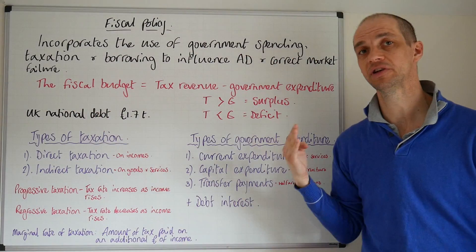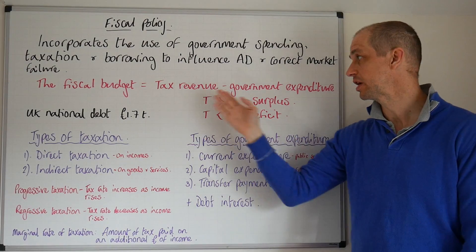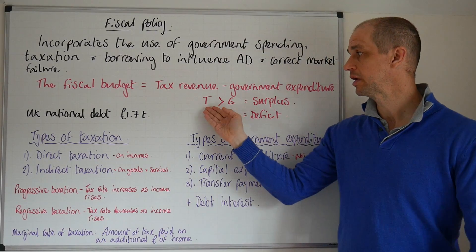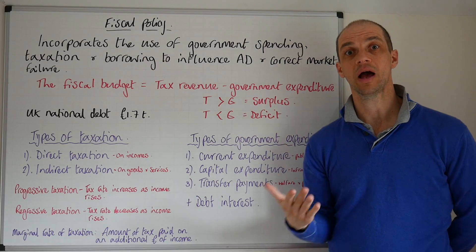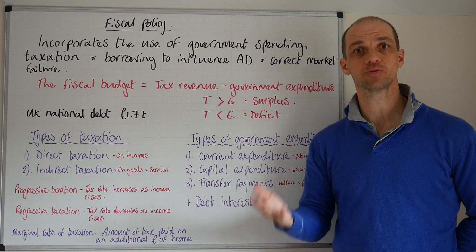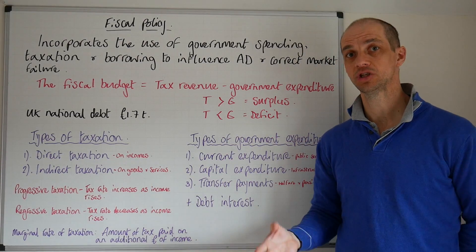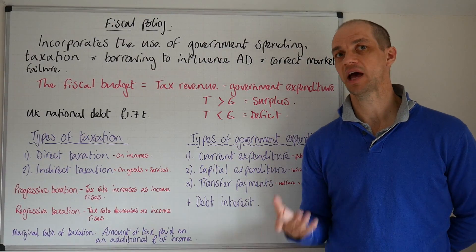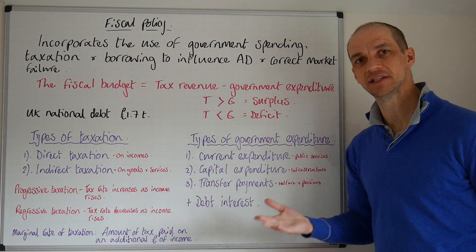When it comes to the fiscal budget, you must understand that this is tax revenue minus government expenditure. If tax revenues exceed government expenditure, then you'll have a fiscal budget surplus. Meanwhile, if tax revenues are actually below the amount of government expenditure, you will have a fiscal budget deficit, as the UK economy has had for many years now — currently to the tune of £80 billion.